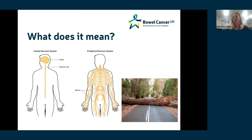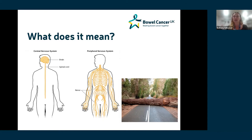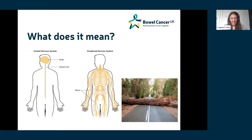Our smaller peripheral nerve endings — the ones that tend to the hands and feet — are like country roads. These struggle if there's an issue because there's no way around: if there's a blockage, there's no alternative route. So those smaller nerve endings impacted by chemotherapy can't compensate and send messages an alternative way, and that is unfortunately why symptoms then develop and are more likely to persist.